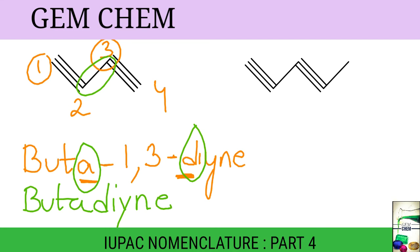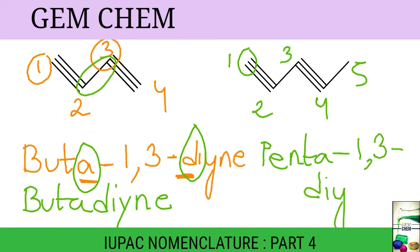The next one is 1, 2, 3, 4, 5. We always start numbering from the triple bond side. So the name will be as follows: since there are 5 carbons, it will be penta and diyne present in first and third position. So we have to write it as penta-1,3-diyne. This is the method to write it. This is important.